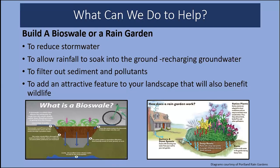How can any of us help? Build a bioswale or a rain garden. It's a positive step in eliminating problems with stormwater runoff. It will allow you to reduce stormwater runoff during a rain event, allow water to soak into the ground and recharge groundwater, filter out sediment and pollutants that would otherwise run into streams and rivers, and if planned correctly, add an attractive feature to your landscape that benefits you and wildlife.